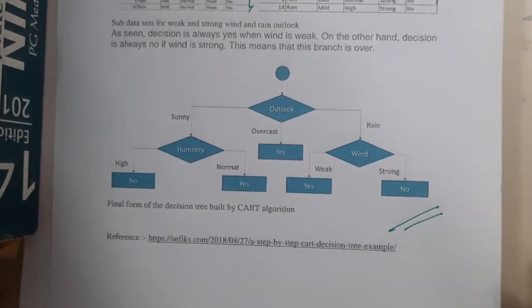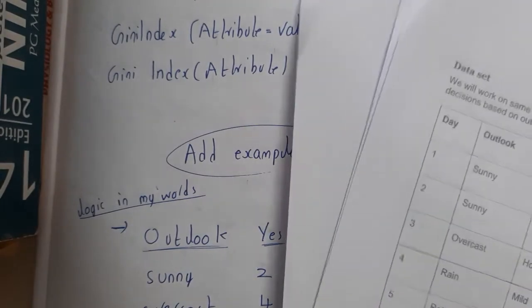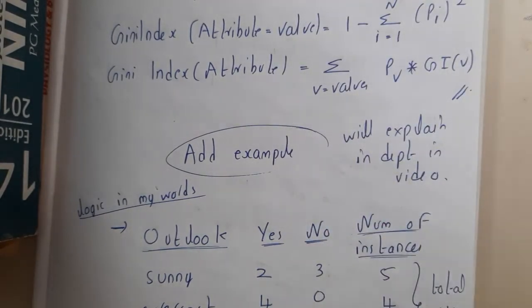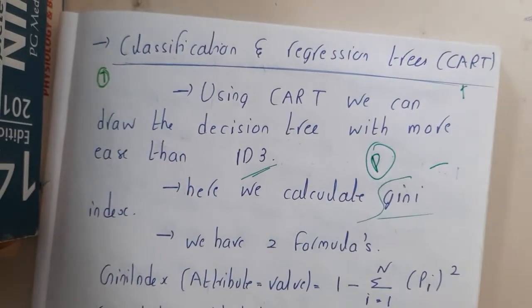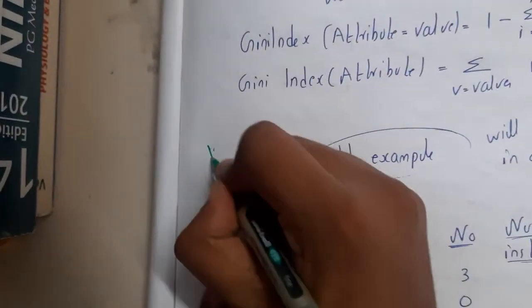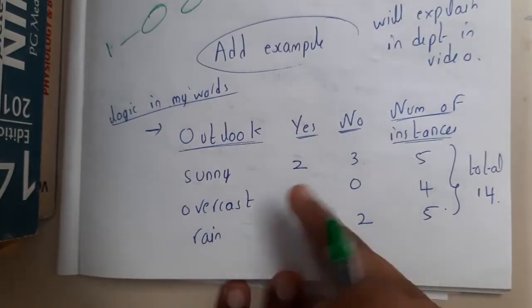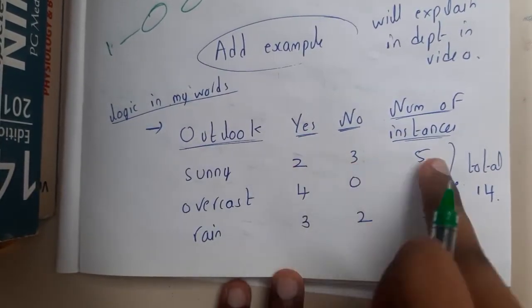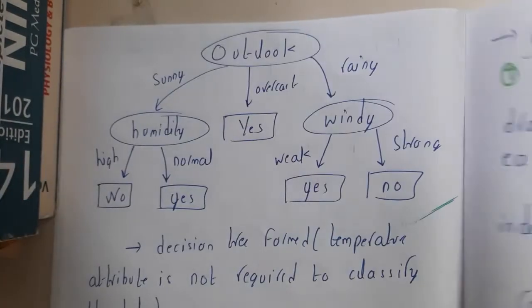This video took around seven minutes — almost half the time of the ID3 explanation. That is the reason I suggest using this method. It is all about probability logic, and remember: the formula is 1 minus the squared probability values. Please don't get confused — always subtract from 1.